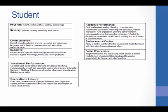This graphic shows part of one of the SETT documents used for considering AT for a student. Having a form like the one Joy has created ensures your team won't forget to address any particular area, including physical, sensory, communication, and cognitive abilities, academic performance, environmental control, and social competence, as well as vocational performance and recreation leisure needs.